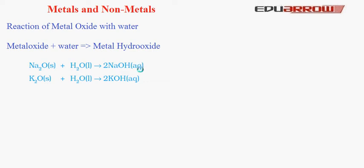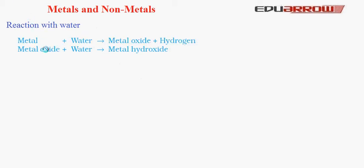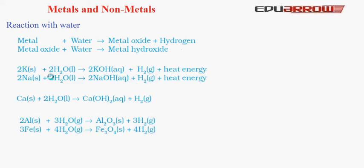Now let us learn how metals react with water. Metal + Water → Metal Oxide + Hydrogen gas; and Metal Oxide + Water → Metal Hydroxide. Different metals show different reactivities towards water. Potassium and sodium react violently with water releasing heat energy: K + H₂O → KOH + H₂ + heat; Na + H₂O → NaOH + H₂ + heat. Calcium reacts less violently: Ca + H₂O → Ca(OH)₂ + H₂.